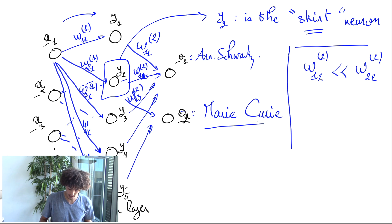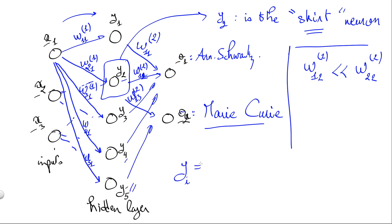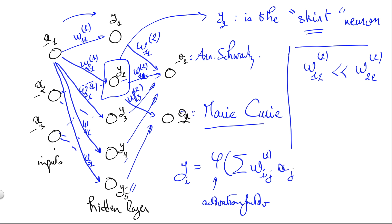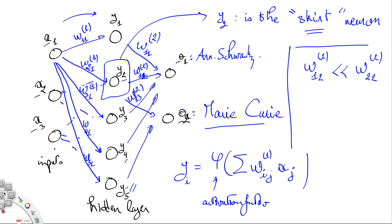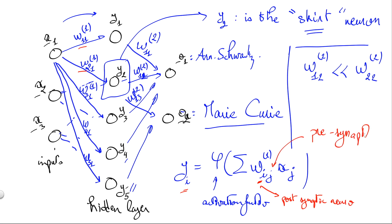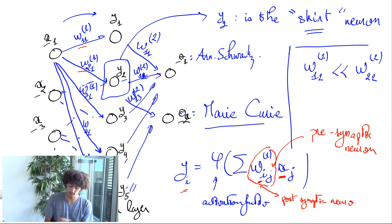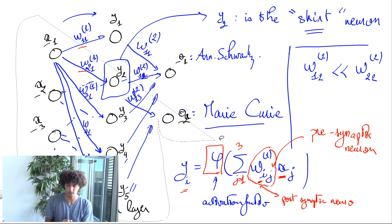Now what do neurons do with the values they receive and the weights they put on those values? Each neuron yi, among those five, applies an activation function to the weighted sum it is receiving from the inputs. In this convention, i means the post-synaptic neuron — the neuron that comes after the synapse — while j is the pre-synaptic neuron. The pre-synaptic neuron sends value xj, the post-synaptic neuron weights it with w(i,j), puts it inside a weighted sum running through all inputs from 1 to 3, and then applies an activation function.